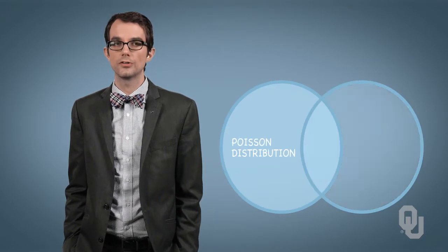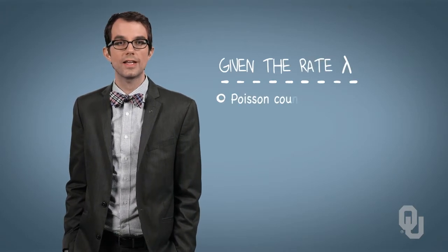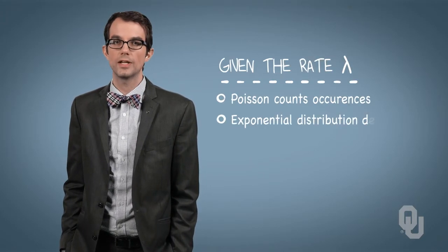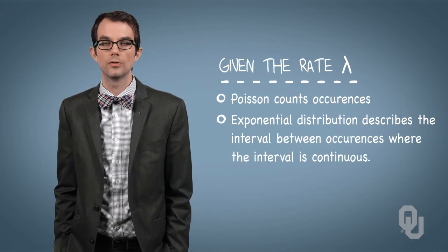Also, there is a relationship between the Poisson distribution and a continuous distribution that we'll discuss later on. Given the rate of occurrence, lambda, the Poisson distribution counts occurrences, while the exponential distribution describes the interval between occurrences, where the interval is continuous, most often describing time.